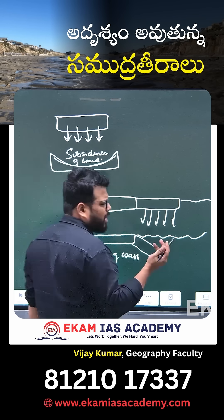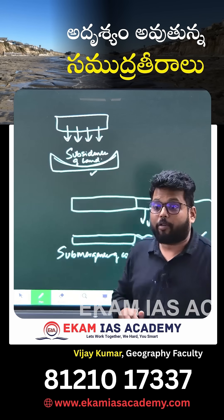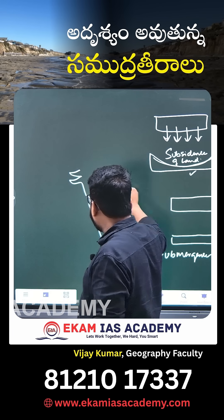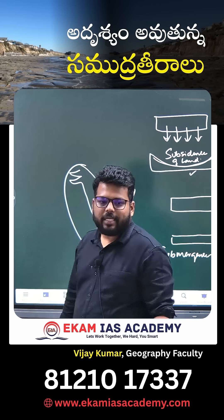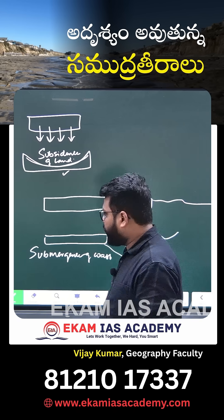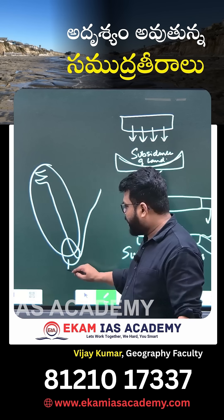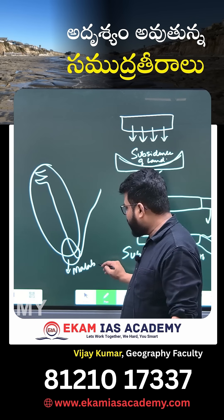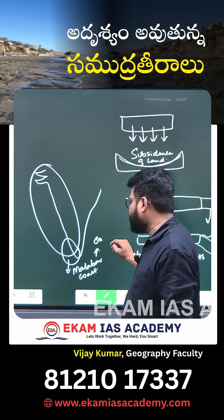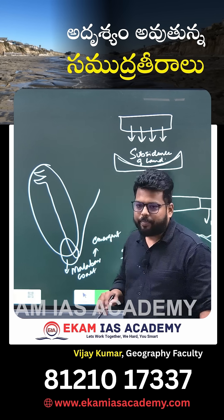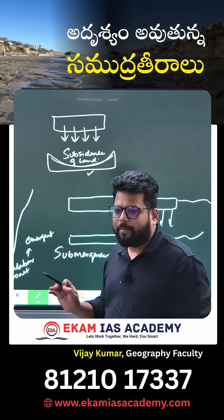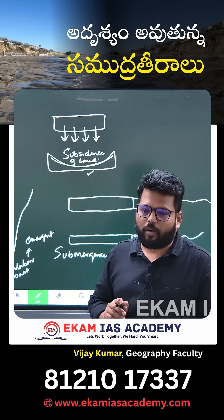The submergence of land has these examples. The western coast of India is an example of a submergence coast, with the exception of Kerala. Kerala alone is an emergent coast. So the coast of India, in the coastal region, falls in the submergence coast category.